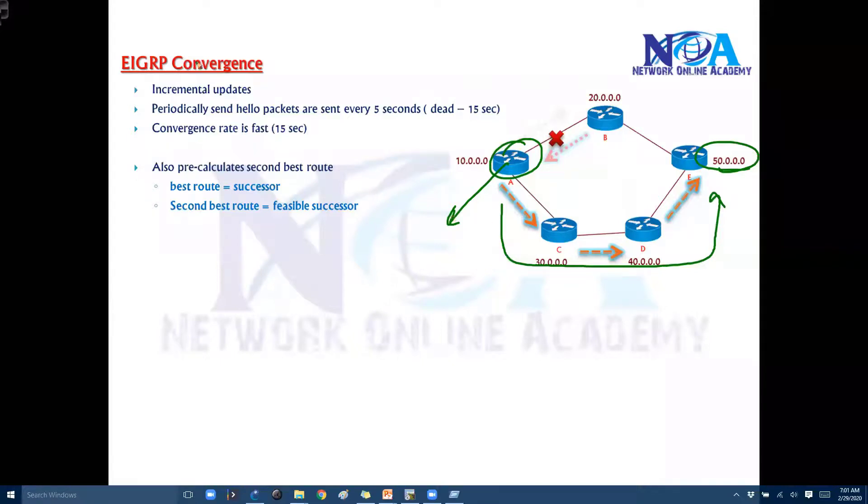So that is what we call as convergence. Convergence means if your best route fails. So this is my best route. How much time it is going to use to use the alternate path or the second path.